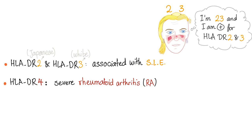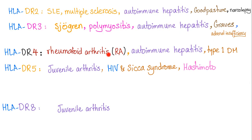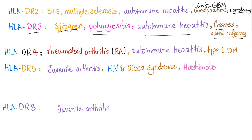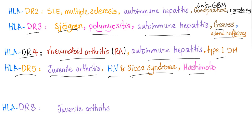For rheumatoid arthritis, we have HLA-DR4. Let's go through the diseases: HLA-DR2 is associated with lupus, multiple sclerosis, autoimmune hepatitis, Goodpasture syndrome (anti-GBM antibody disease), and narcolepsy. HLA-DR3 is associated with Sjögren, polymyositis, autoimmune hepatitis, Graves' disease, and adrenal insufficiency. HLA-DR4 is associated with rheumatoid arthritis, autoimmune hepatitis, and type 1 diabetes. HLA-DR5 is associated with juvenile arthritis, HIV, sicca syndrome, and Hashimoto's thyroiditis. Note: sicca syndrome is similar to Sjögren but not the same.